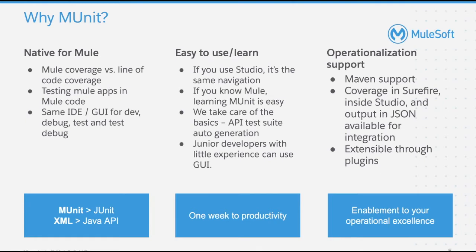MUnit is also preferred over other unit testing frameworks such as JUnit, which is used for writing and running tests in the Java programming language. Whereas MUnit is XML-based, so it is easier to read and write code compared to Java. MUnit can also enable operational excellence as it is integrated with Maven, which makes integration with build systems such as Jenkins very simple.